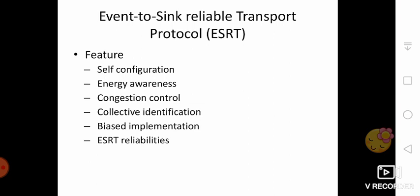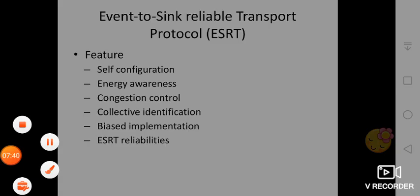Biased implementation: ESRT operates on sink nodes with minimum functionalities, thereby reducing heavy load at sink nodes, which improves reliability. Finally, ESRT reliability: each sink node is expected to receive a collective report from each sensor node. Thank you for listening.